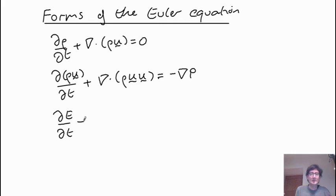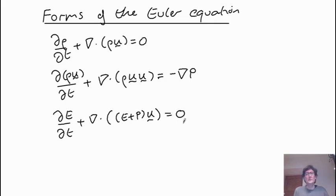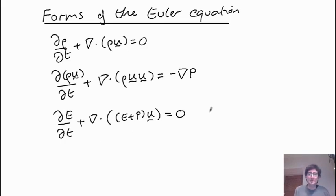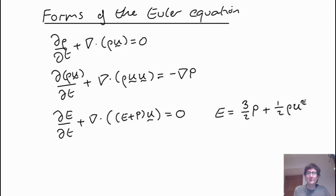Then we have an equation for the energy density of the system. Here we have a divergence of (E + p) times u equals zero. There would be other terms like heat flux, but we've neglected them. E, for an ideal monatomic gas, is 3/2 times the pressure plus the kinetic energy density, which is half rho u squared. So E contains both the internal energy and the kinetic energy of the fluid.